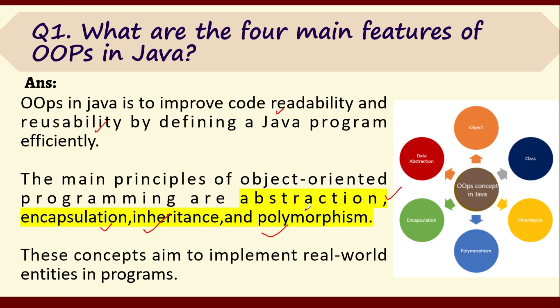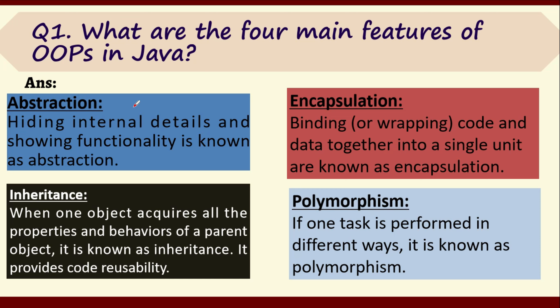You take any programming language, these four features are going to be there, and using them we implement our real-life programs. What is abstraction? Whenever you want to hide internal details and show only the main functionality, that concept is known as abstraction. For example, if you are using a function like Math.sqrt(), do you know how that sqrt function has been built? You only know the syntax of using it — the programmer is least bothered about the internal detail.